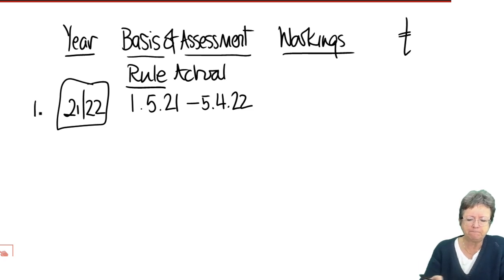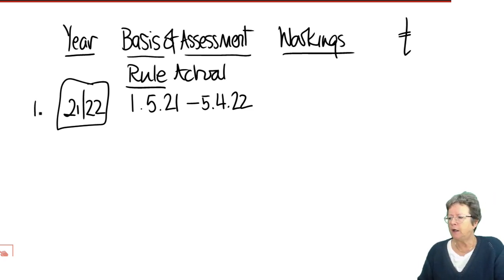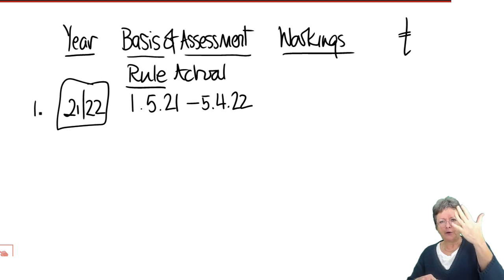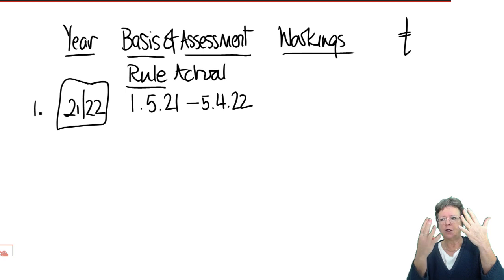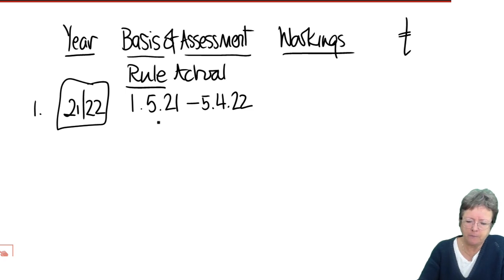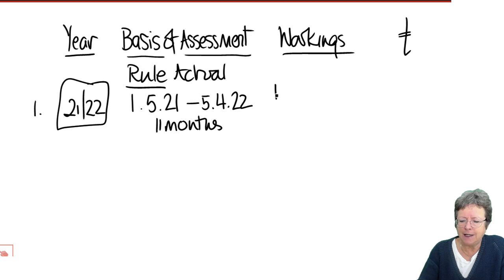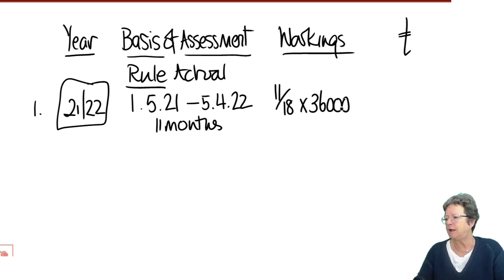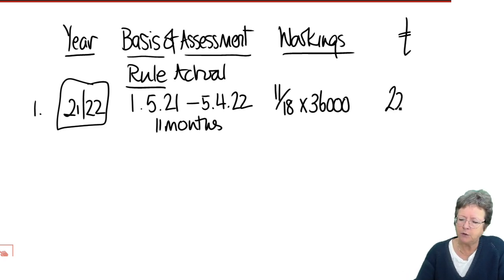So the first year of trade: we're looking at a set of accounts. How long is that period? May, June, July, August, September, October, November, December, January, February, March — 11 months. So we're looking at 11/18ths of the £36,000 profits made in that 18-month period, which is £22,000. Year two is 22-23 and we're confident in that because we got the date right.